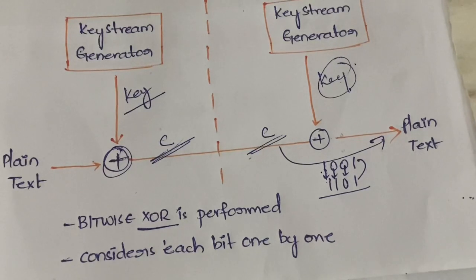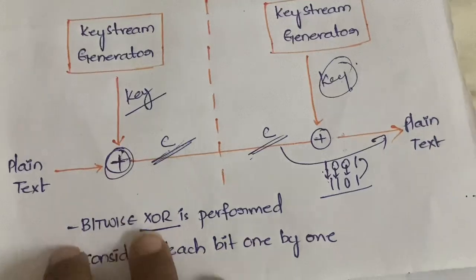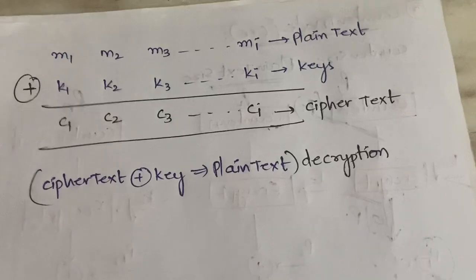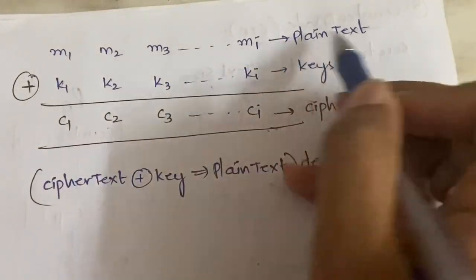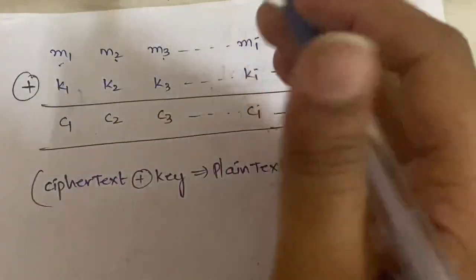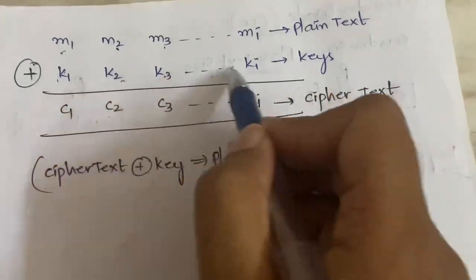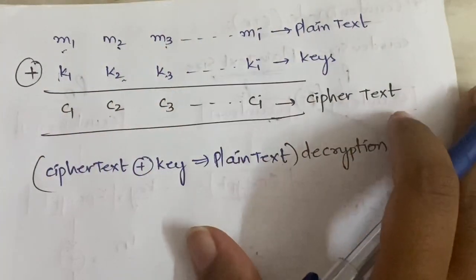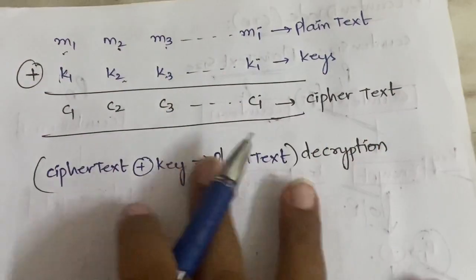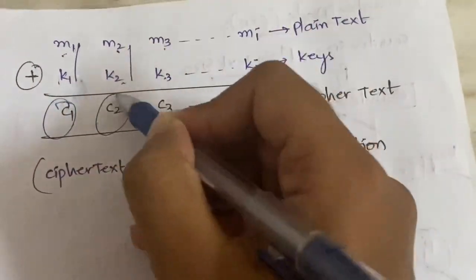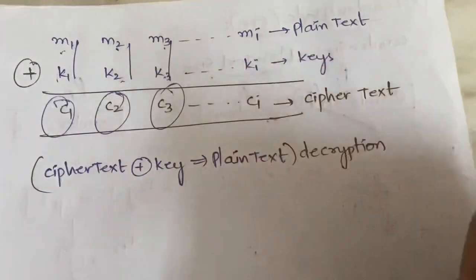Bitwise XOR means it considers each and every bit one by one. To illustrate: the plain text is m1, m2, m3, and so on up to mi, and the key is k1, k2, k3, and so on up to ki. You perform the XOR operation between m1 and k1 to get c1, between m2 and k2 to get c2, between m3 and k3 to get c3, and so on.